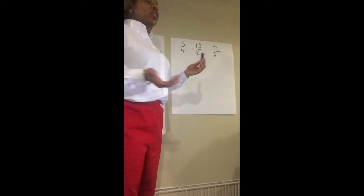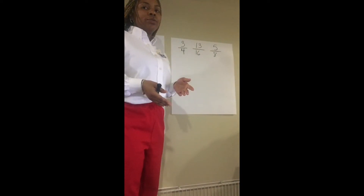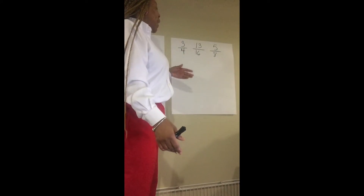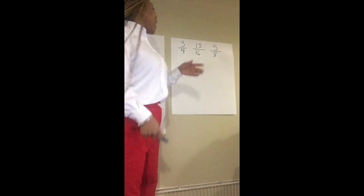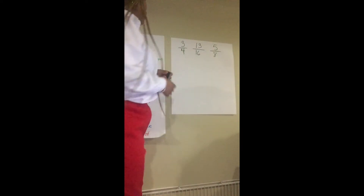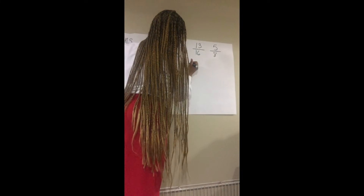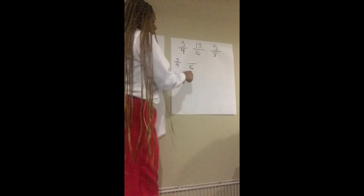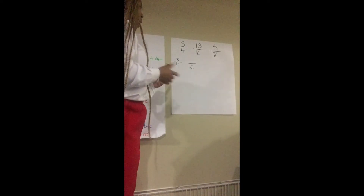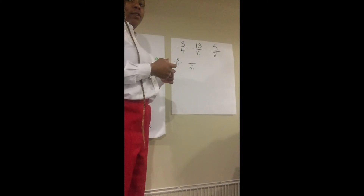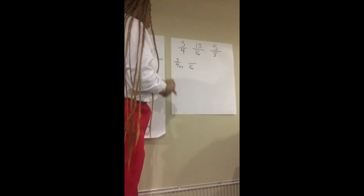As we can see, only one of our fractions actually has the denominator of sixteen, so now we're going to make new equivalent fractions with three fourths and five eighths, so we can get the same common denominator as thirteen sixteenths. We're going to start with three fourths. How can we go from four in this fraction to sixteen in this fraction? By multiplying — and this is something we learned the week before. Four times what gives us sixteen?